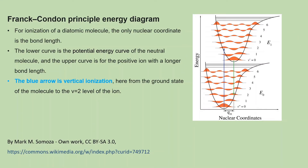This figure illustrates the Franck-Condon principle, taken from Wikipedia. For ionization of a diatomic molecule, the only nuclear coordinate is the bond length. The lower curve is the potential energy curve of the neutral molecule, and the upper curve is for the positive ion with a longer bond length. The blue arrow represents the vertical ionization, from the ground state of the molecule to the V=2 vibrational level of the ion.